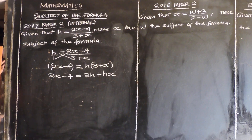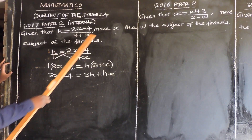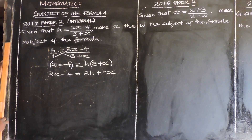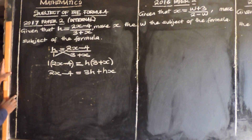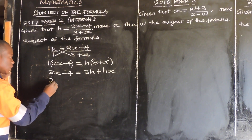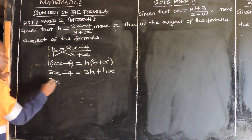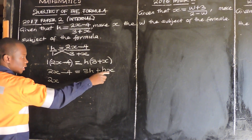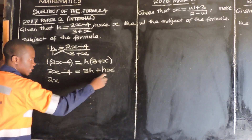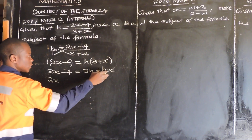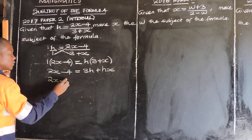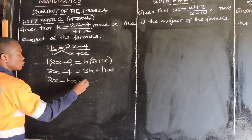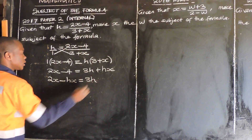Then at this level, since we are told to make x the subject of the formula, we are going to group the x terms together. So 2x has got x — which other term has got x? It's hx. Since hx is positive on this side, when transposed to the other side it becomes negative. So negative hx is equal to 3h.